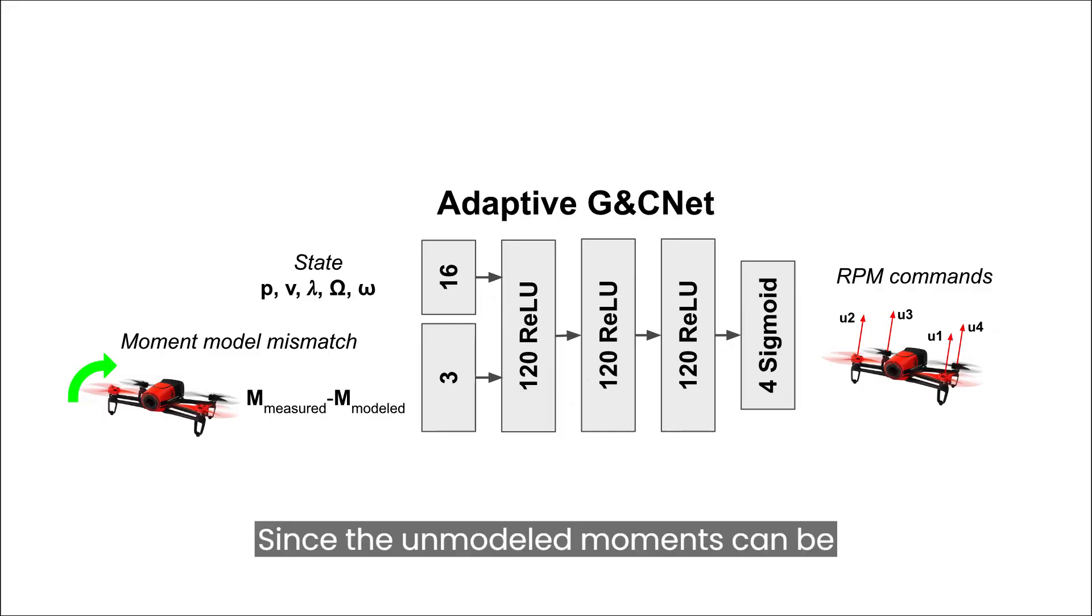Since the unmodeled moments can be measured on board, we propose an adaptive guidance and control net that uses the model mismatch as input to find the corresponding optimal output.